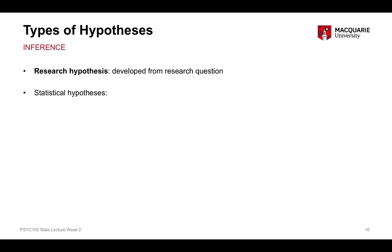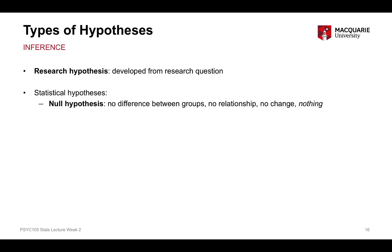The next two kinds of hypotheses are statistical hypotheses. They're not as relevant to the research process as the research hypothesis, but they're fundamental to the process of statistical inference and analyses. We have two kinds: a null hypothesis and an alternate hypothesis. The null hypothesis says there is no difference between groups, no relationship between variables, no change over time — there's nothing going on, no effect.